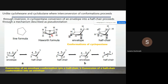Here I have shown all possible conformations of cyclopentane: the line formula, the planar structure, and the envelope conformation. In the envelope conformation, four carbon atoms lie in the same plane and only one carbon atom lies outside the plane.